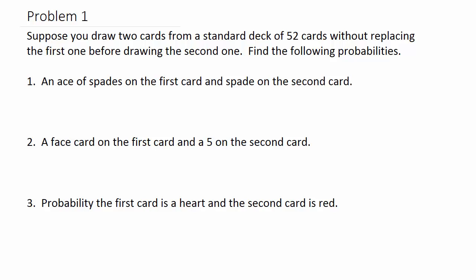When we have two events, they can either be dependent or independent. If they're dependent, that means the first event will affect the second event. If they're independent, that means the first event will not affect the second event. In this problem, we're drawing two cards from a standard deck of 52 cards and we are not replacing the first one, so the two events are dependent.